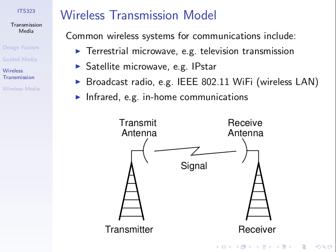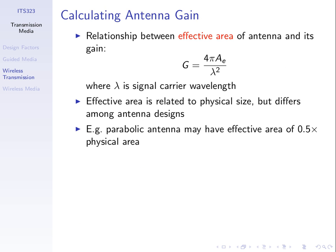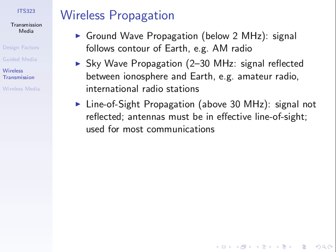What impacts upon how much power is lost between transmitter and receiver? Our signal's impairment and the amount of signal strength it loses depends upon the frequency of that signal. Here are three categories: signals below 2 MHz, between 2 and 30 MHz, and above 30 MHz. They have different characteristics in how they propagate.